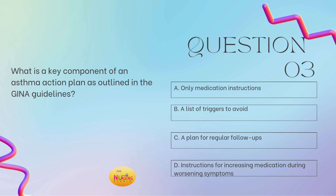Question number three: what is a key component of an asthma action plan as outlined in the GINA guidelines? Is it A, only medication instructions; B, a list of triggers to avoid; C, a plan for regular follow-ups; or D, instructions for increasing medication during worsening symptoms? Tell me what you got.